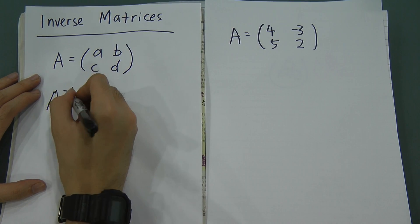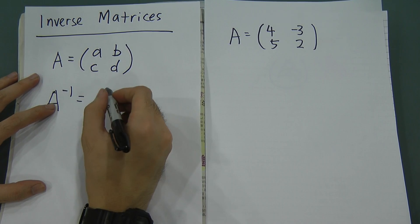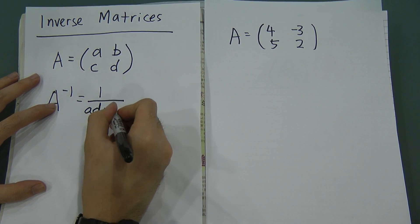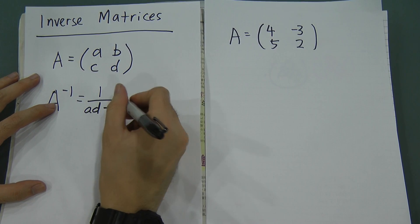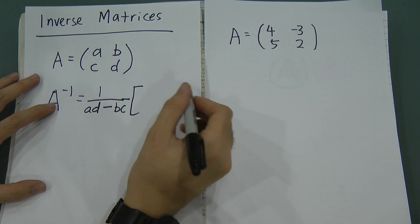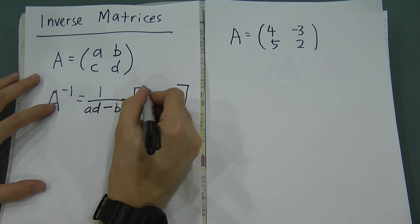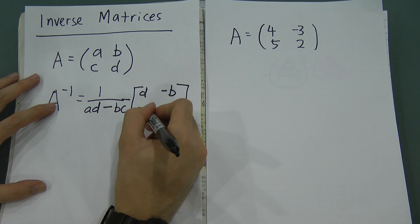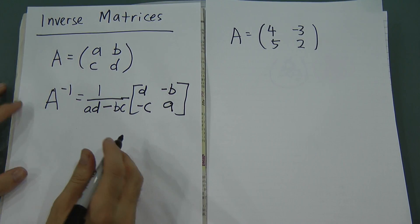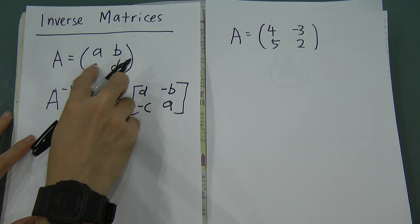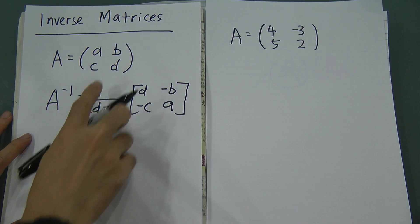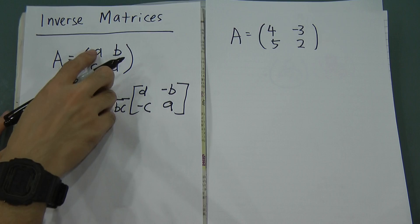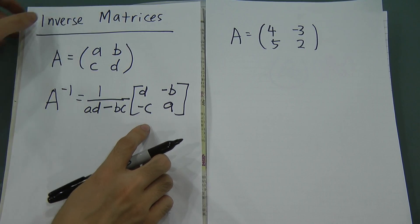For the inverse matrix, you get 1 over AD minus BC, and then in the matrix A and D have to change places — so D goes where A was and A goes where D was — and B and C have to add a negative, so negative B and negative C. Let me repeat: if matrix A is [A, B, C, D], the inverse of A is 1 over AD minus BC, with A and D swapped and B and C negated.